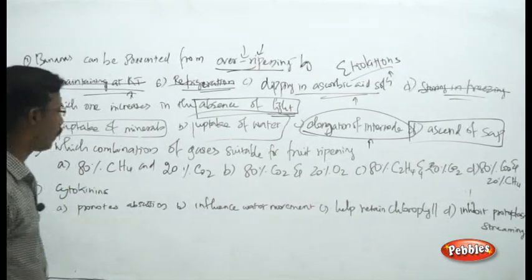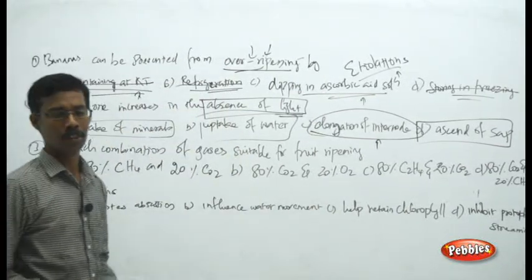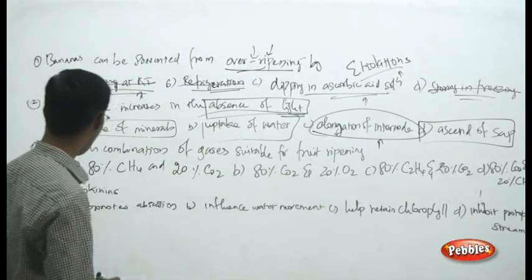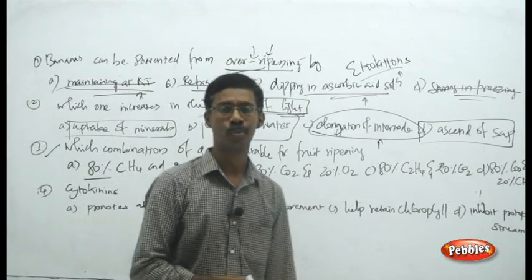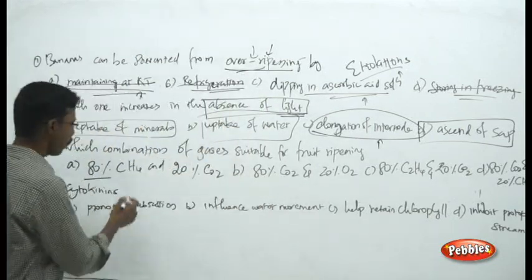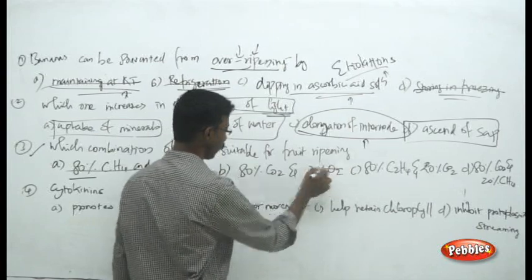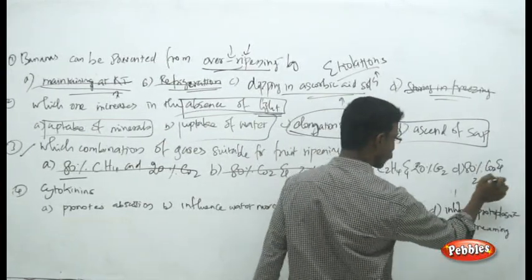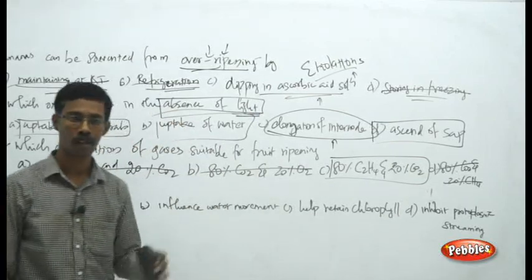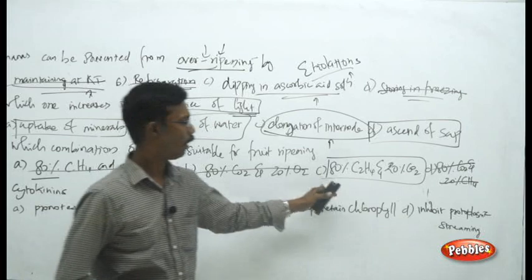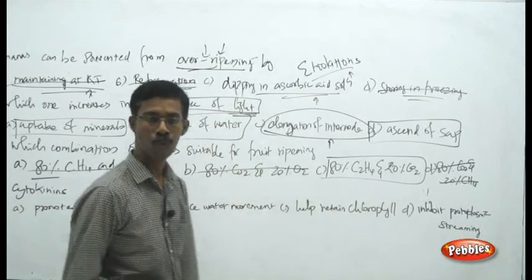Next question: which combination of gases is suitable for fruit ripening? As discussed, ethylene is responsible. The choices include 80% methane + 20% CO2, CO2 + oxygen, 80% CO2 + 20% methane — none of these are correct. The answer: 80% ethylene and 20% carbon dioxide. This 80:20 ratio of ethylene and carbon dioxide is the combination used for artificial ripening of fruits in the market.